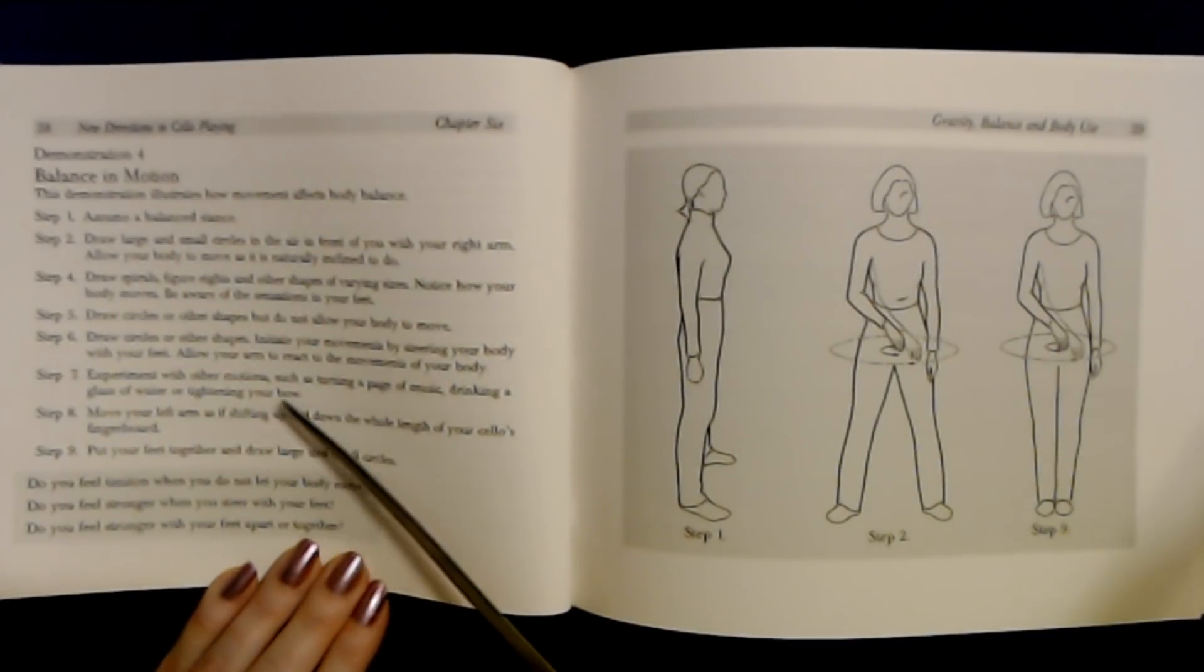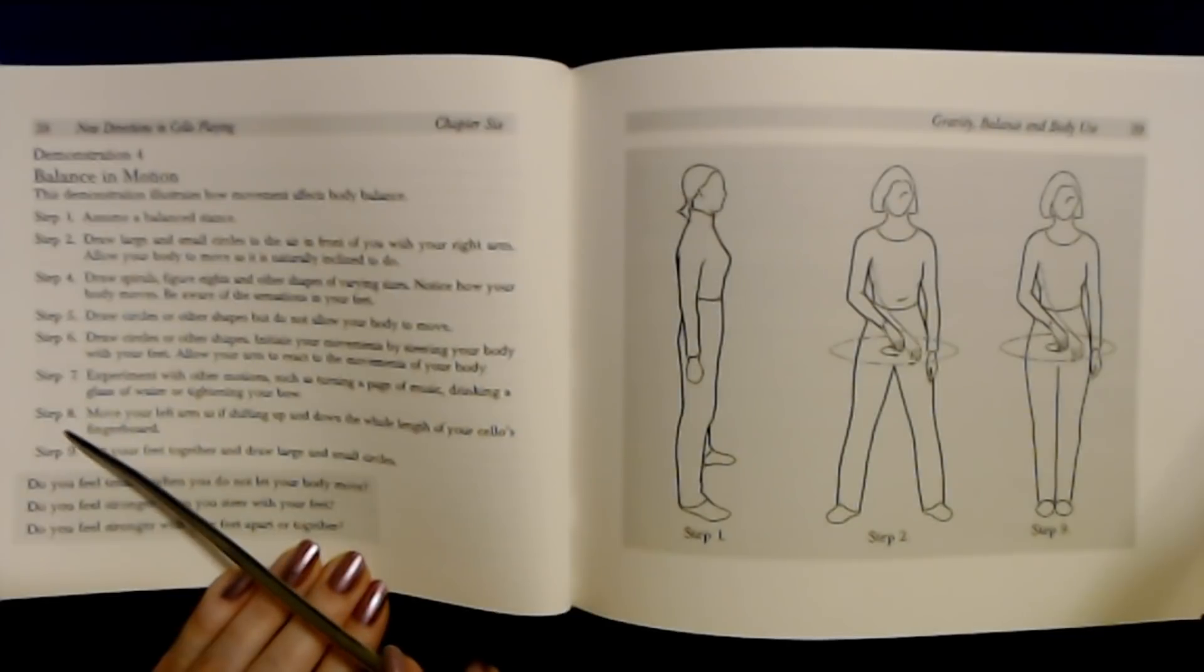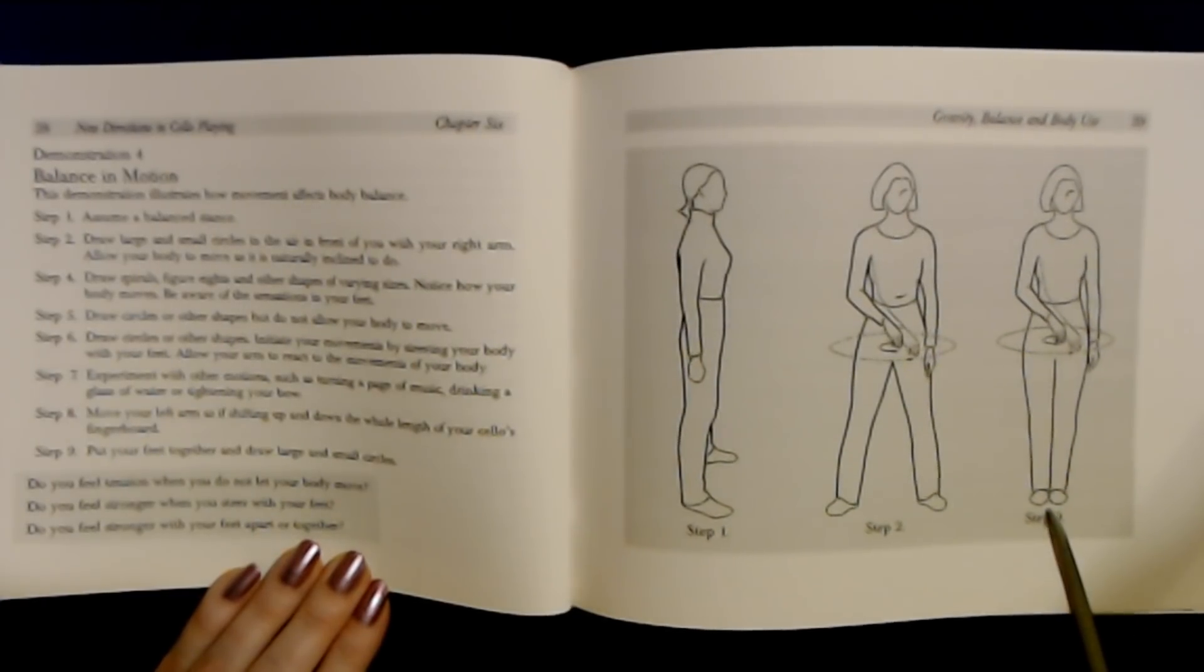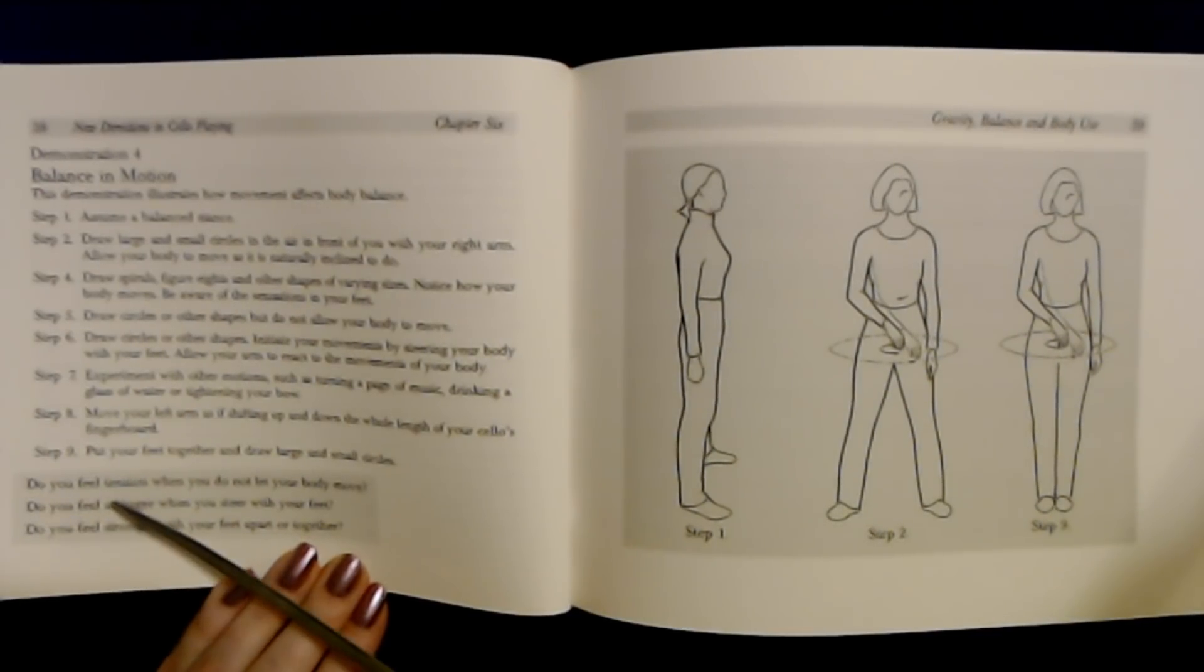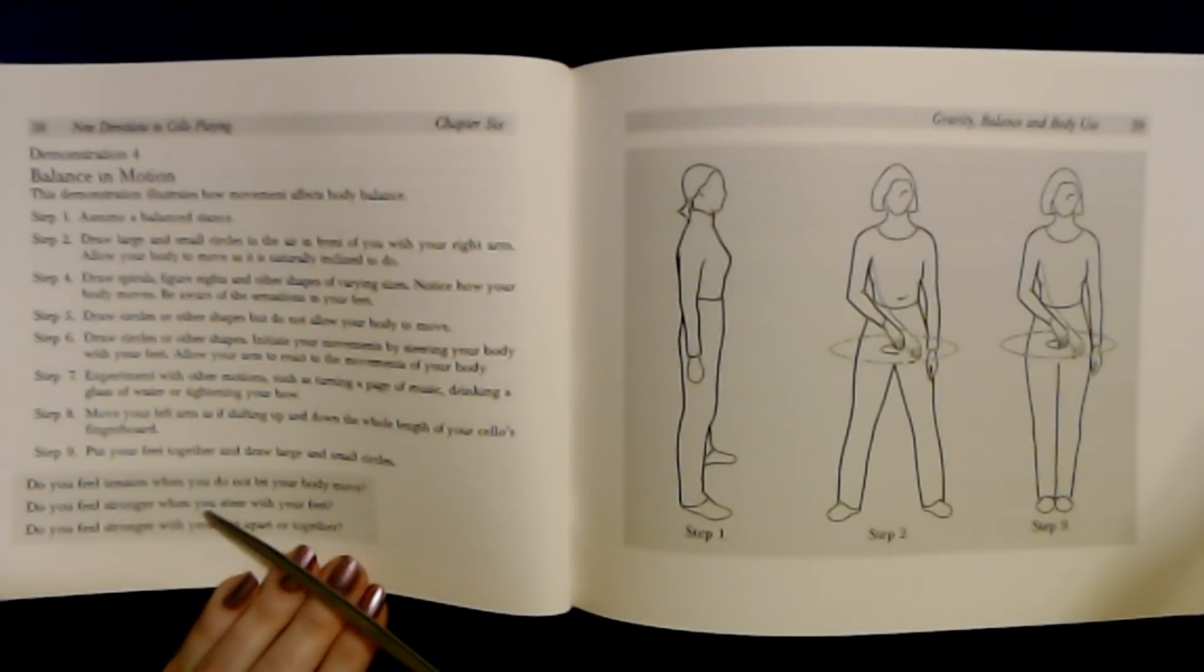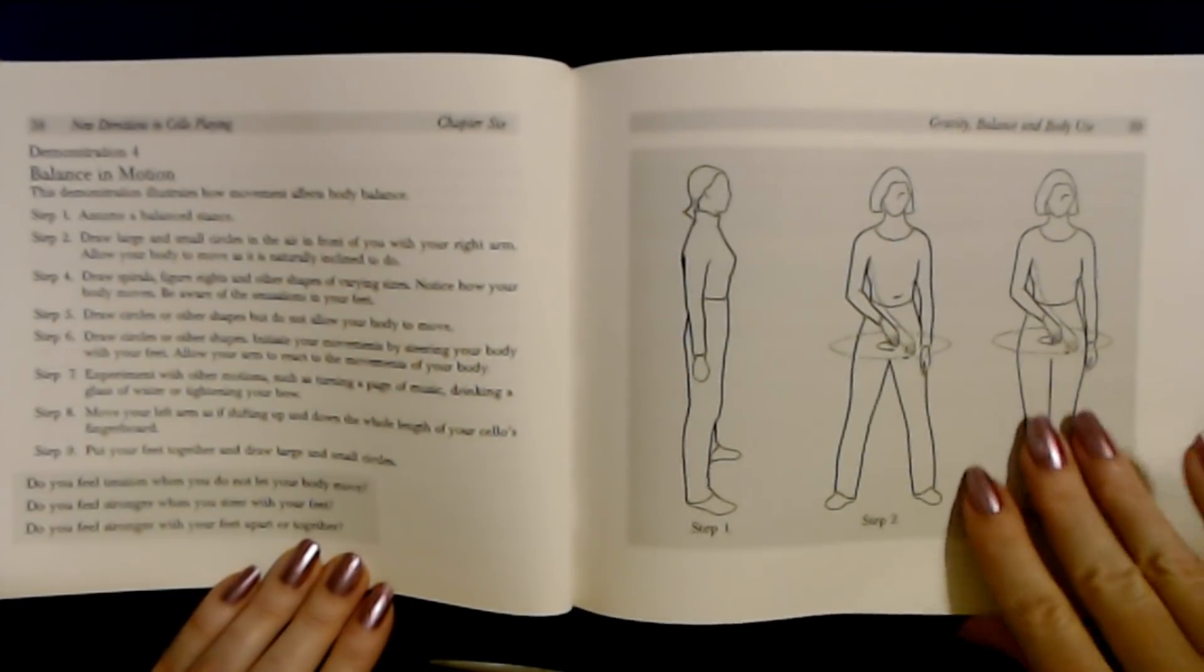Step five: Draw circles or other shapes but not allowing your body to move. Step six: Draw circles or other shapes, steering your body with your feet. Allow your arms to react to the movements of your body. Step seven: Experiment with other motions such as turning a page of music, drinking a glass of water, tightening your bow. Step eight: Move your left arm, shifting up and down the fingerboard. Step nine: Put your feet together.